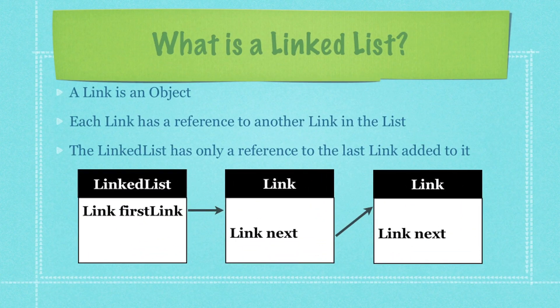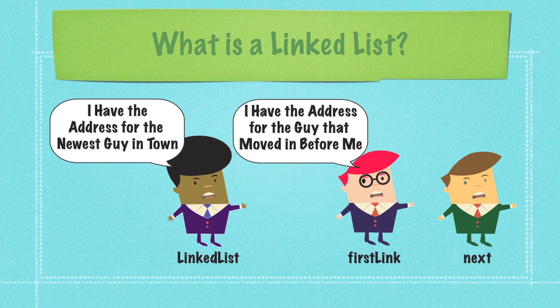So what is a linked list? Well, first what you have to understand is a link is just simply an object. And each link that you create has a reference to another link in the list. The linked list is just another class and it has only one reference to one of the links in the linked list, and that is the last link that was added.